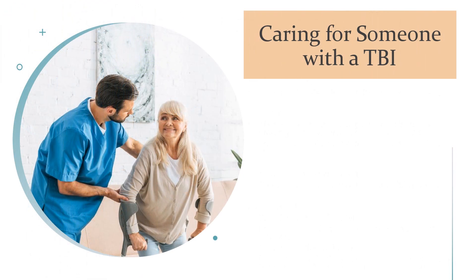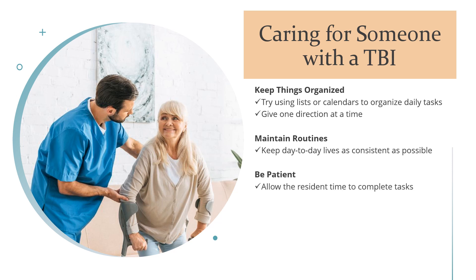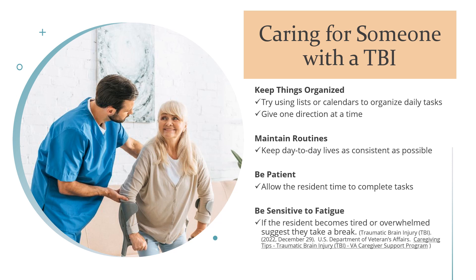When caring for someone with a TBI: keep things organized by using lists or calendars to manage daily tasks, and give one direction at a time. Maintain routines by keeping day-to-day life as consistent as possible. Be patient and allow the person time to complete tasks. Finally, be sensitive to fatigue — if the person becomes tired or overwhelmed, suggest they take a break.